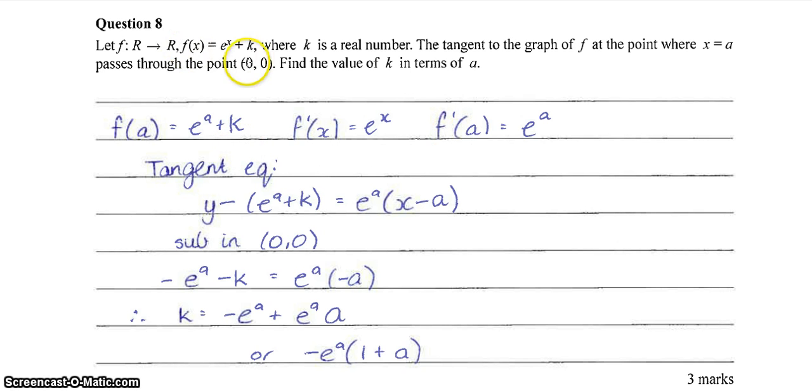So f of a is e to the a plus k. If we differentiate f of x, we get e to the x. And if we sub a into that, we get e to the a. So we know that the y coordinate where x is equal to a, the y coordinate is e to the a plus k. And we know that the gradient at that point is e to the a. So that gives us enough information to find the equation of the tangent. So if we use the formula y minus y1 equals m x minus x1, and we sub in our y coordinate here, and our x coordinate here, and our gradient here, that actually gives us the equation of the tangent at the point where x equals a.